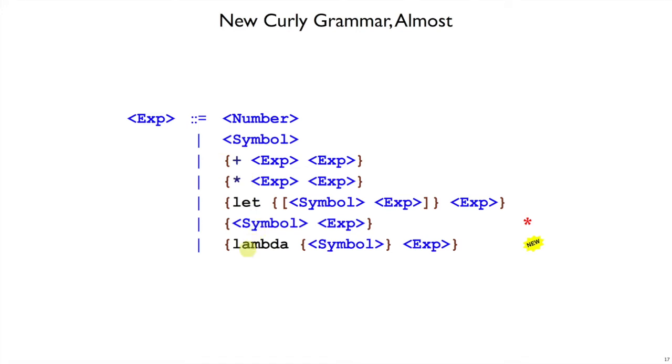Here's our curly grammar, but now I've added a new line, the lambda line. We're going to consider just lambdas with functions that take one argument, in the same way that we had only functions that take a single argument when we had define.